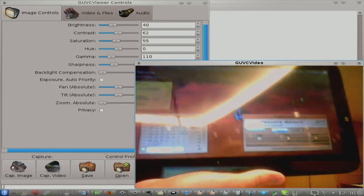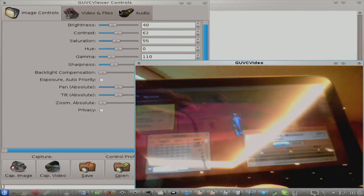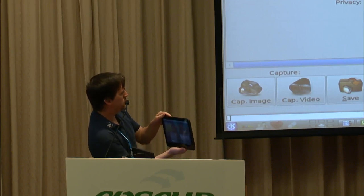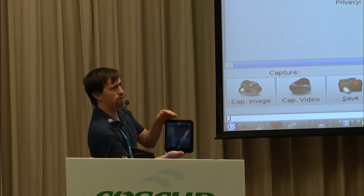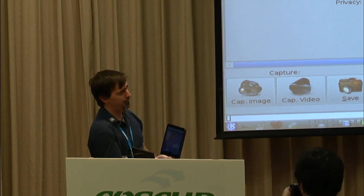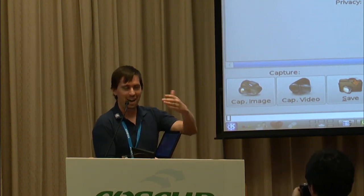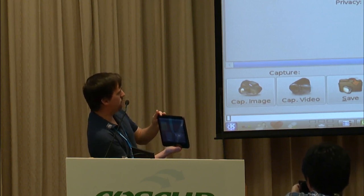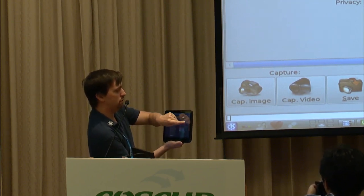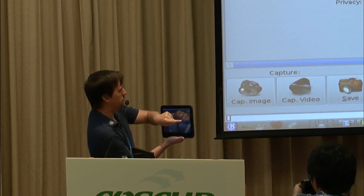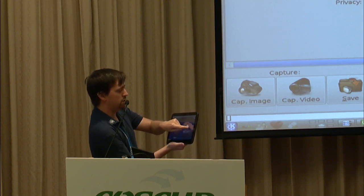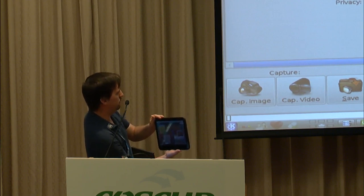So here we have a tablet running Plasma Active. Keep in mind this is running like 95-plus percent of the same code we run on the desktop and on netbooks. One of the key features is that it's activity-based. We didn't want to create another thing that was just an application bucket — you turn it on and get a row of icons to launch Angry Birds. Do we really have to have yet another row of icons? So this is activity-based — there's a little flicker on the side where I can go through and see all the activities I have currently running.